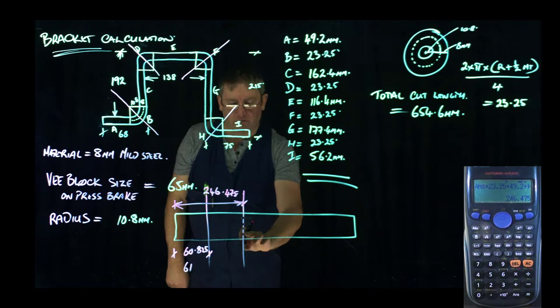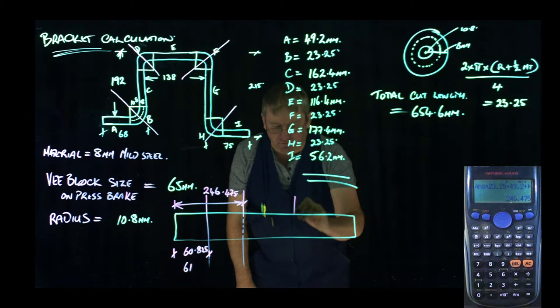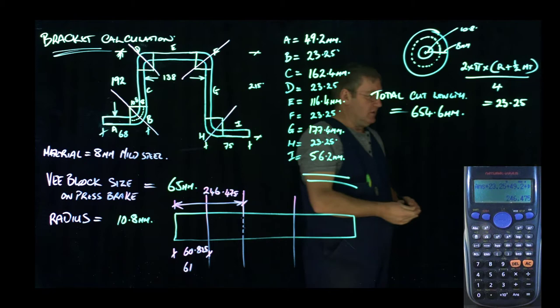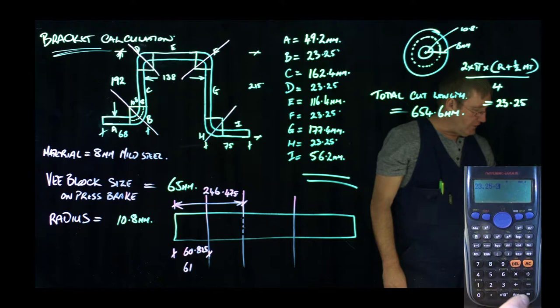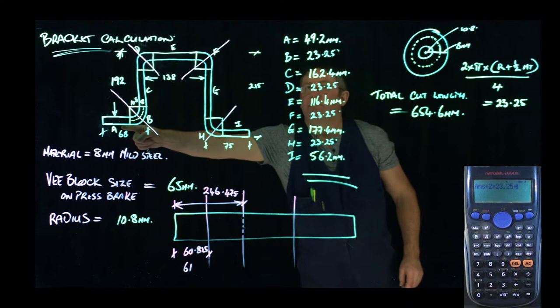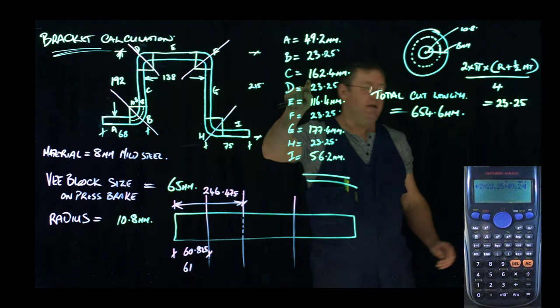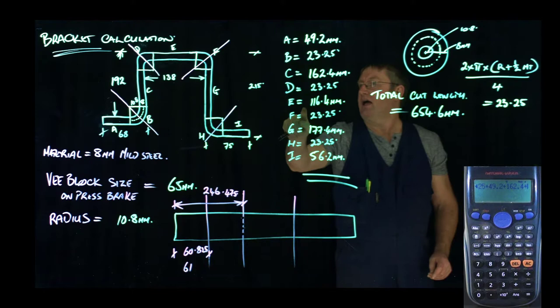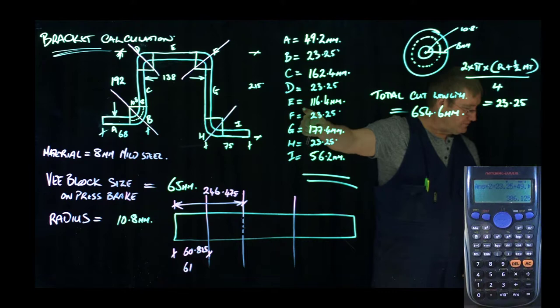So the next fold position from the very end. So this fold position here. Go back to the calculator. 23.25 was for the corner, so divide that by 2. And we're going to add in plus 2 corners, 2 times 23.25. Plus A, 49.2. Plus C, 162.4. Plus E, 116.4. Equals. So we've got 386 millimeters from the very end of the bar to our next fold, this one here.